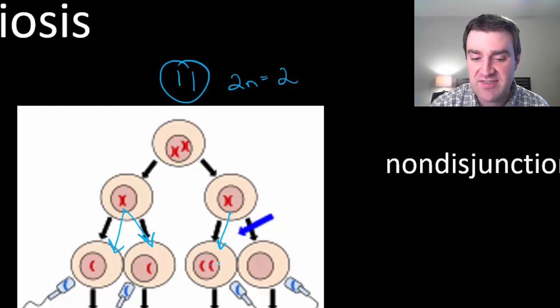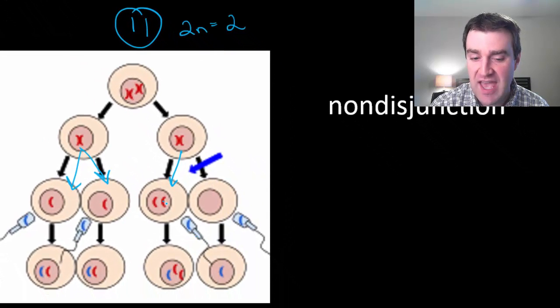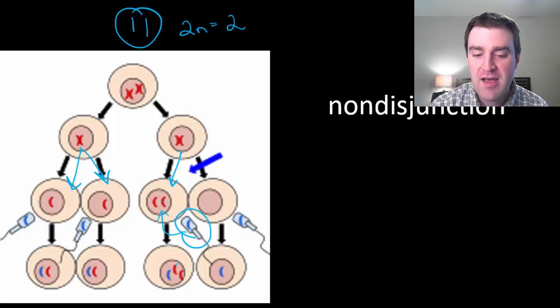If that particular set of sex cells were to go on and fertilize, let's say that the eggs were being made in this process and maybe dad's sperm comes in with a normal one chromosome, then you might have an organism that has too many chromosomes or too few.